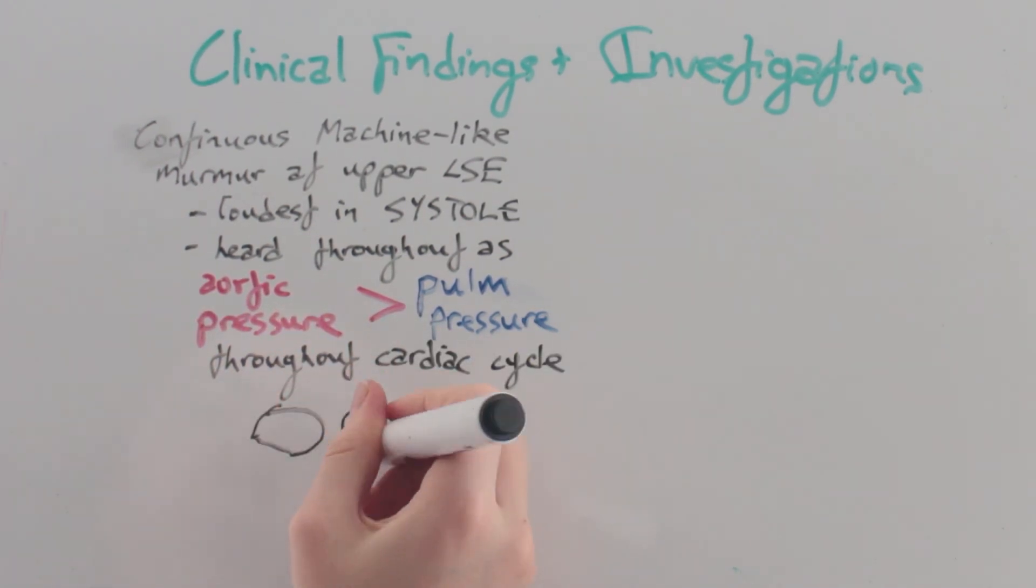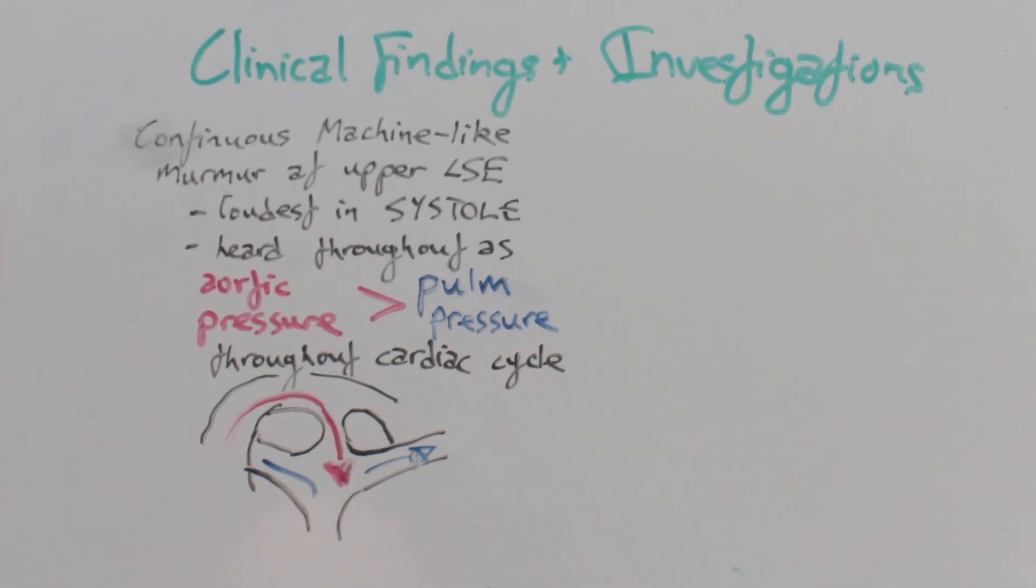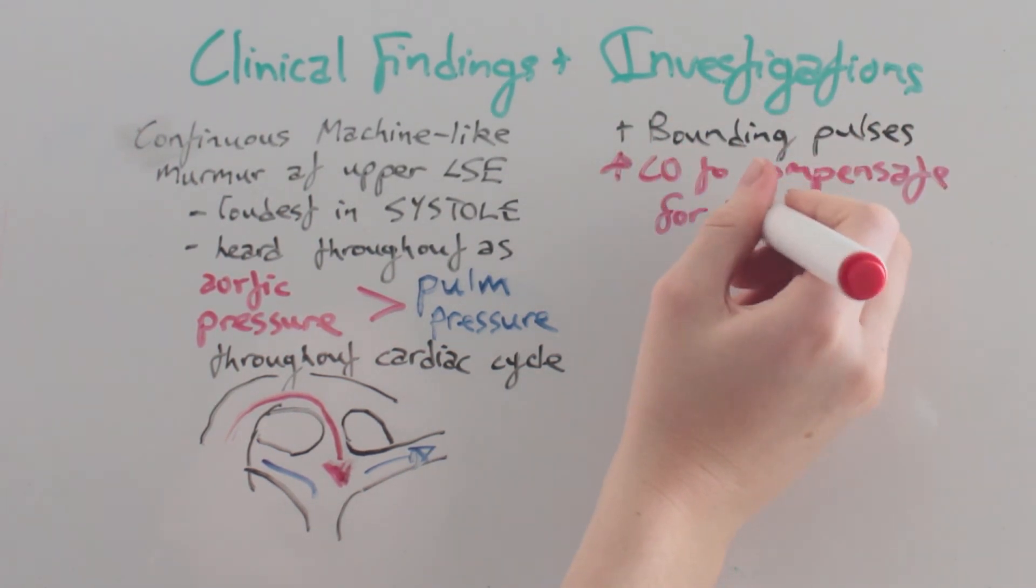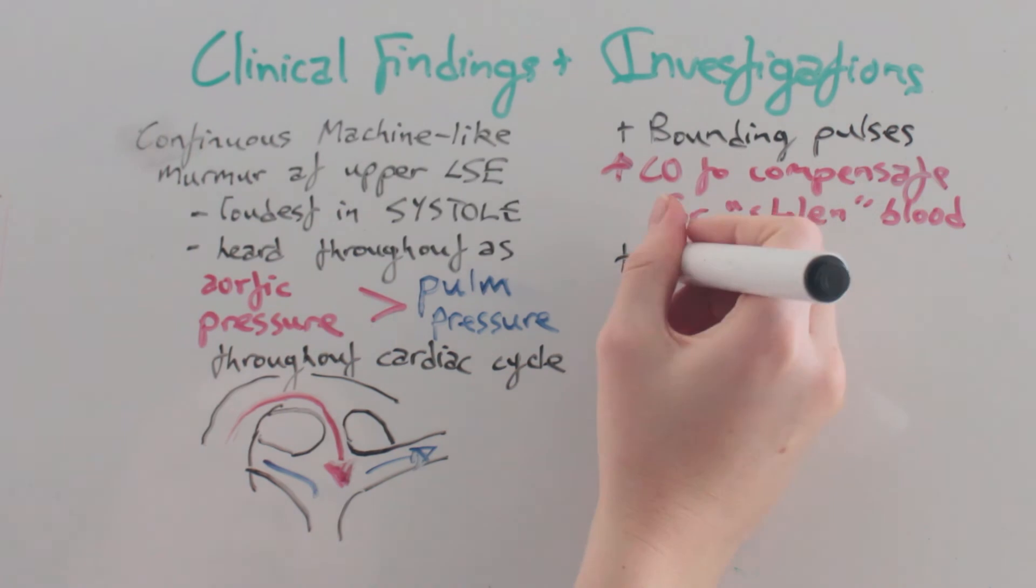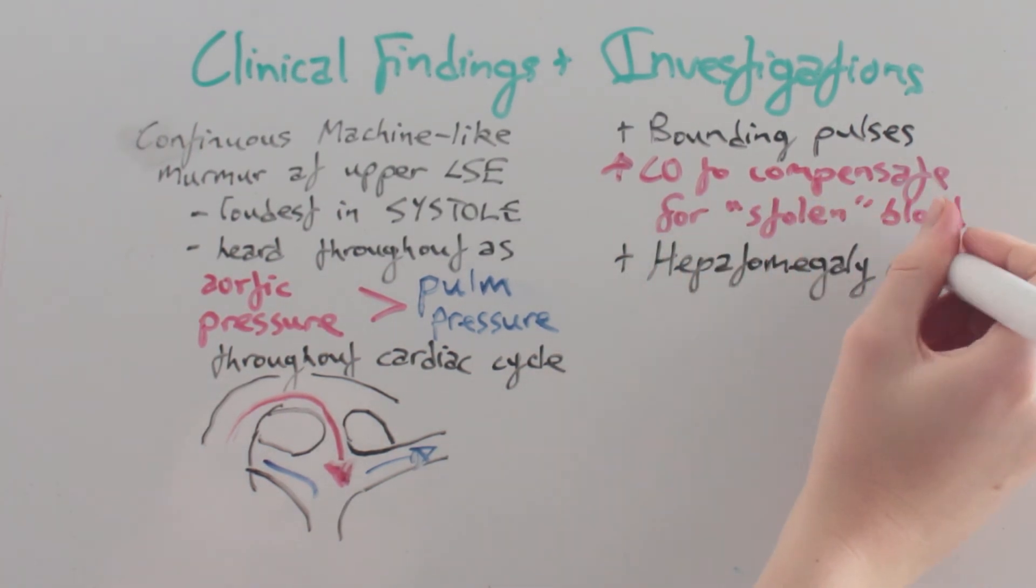This results in a constant shunt from the aorta to the pulmonary trunk. We also find bounding pulses as a result of increased cardiac output to compensate for this blood being stolen, and hepatomegaly where there is congestive heart failure.